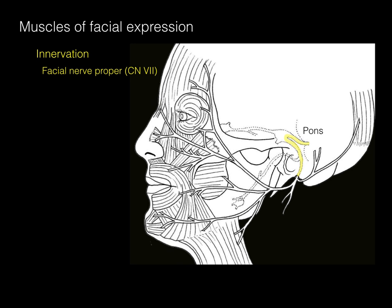These fibers arise from the pons, as do all parts of the facial nerve, and then as soon as they course through the pons, they enter and traverse this opening called the internal acoustic meatus, where both cranial nerves seven and eight course through. The facial nerve proper branch then courses down the facial canal, going through the petrous part of the temporal bone, down to the base of the skull, and then exits through a hole between the mastoid and styloid processes, called appropriately the stylomastoid foramen.